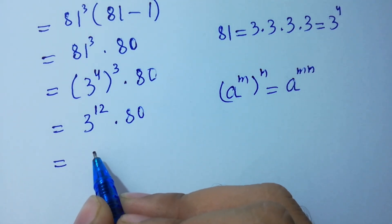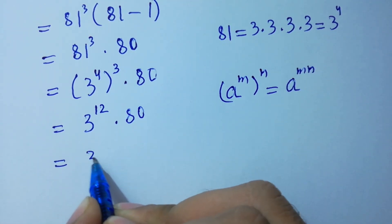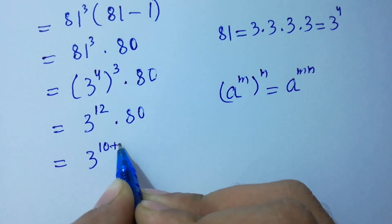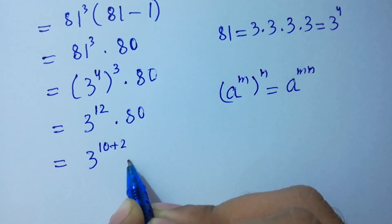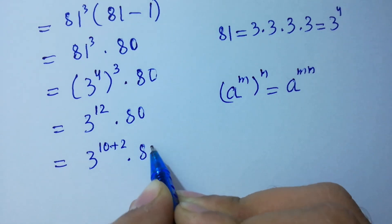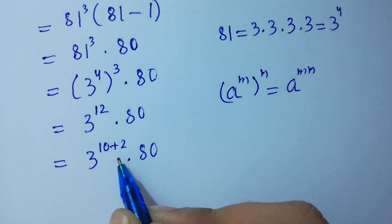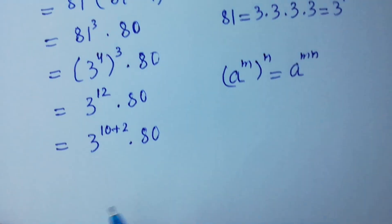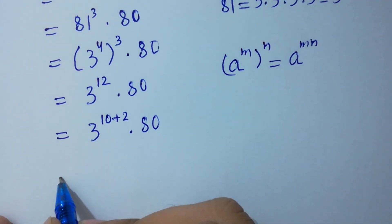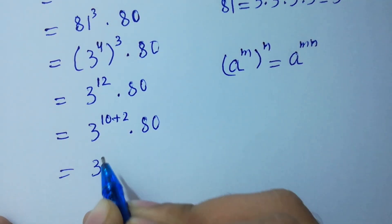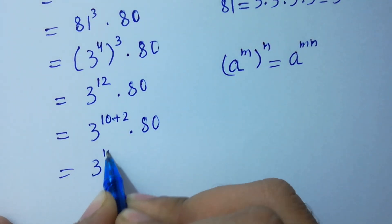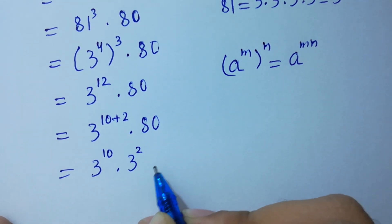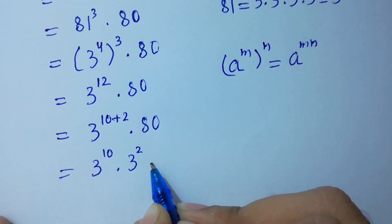This is the same as 3 to the power 10 plus 2, times 80, because 10 plus 2 equals 12. So we have 3 to the power 10 times 3 to the power 2, times 80.